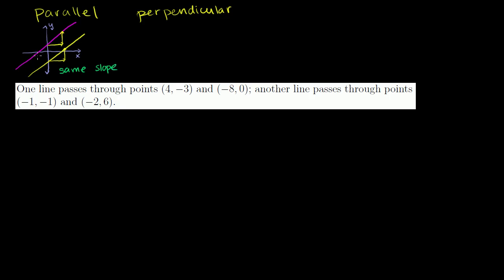Parallel lines have the same slope. Perpendicular lines, depending on how you want to view it, they're kind of the opposite. A line that is perpendicular to another will not only intersect the line, it will intersect it at a right angle — at a 90 degree angle. I actually prove this in the linear algebra playlist. But a perpendicular line's slope: if the yellow line has a slope of m, then the orange line that's perpendicular to it is going to have a slope of negative 1 over m. Their slopes are going to be the negative inverse of each other.